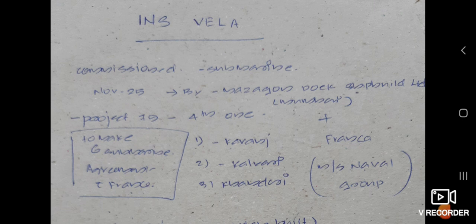INS Vela has been made under project 75 and it is the fourth submarine to be built under this project.